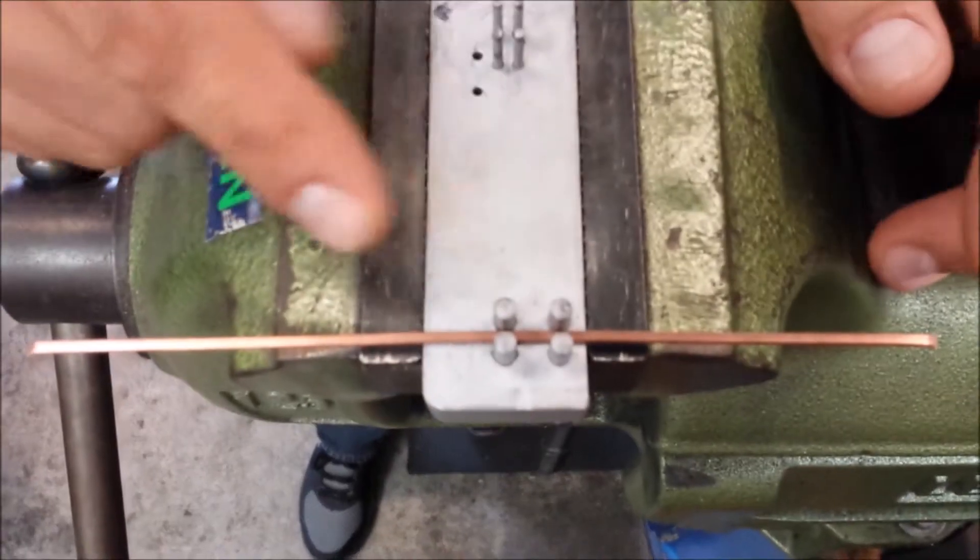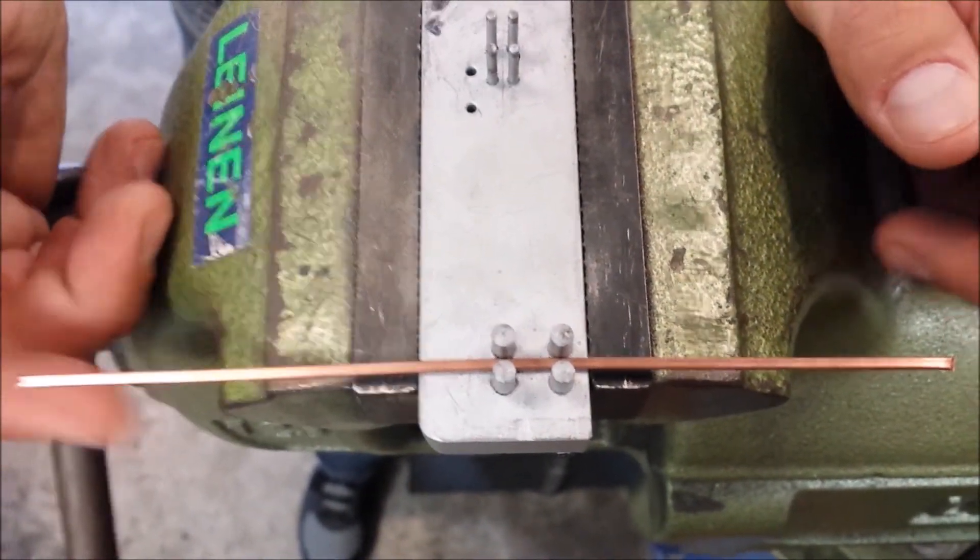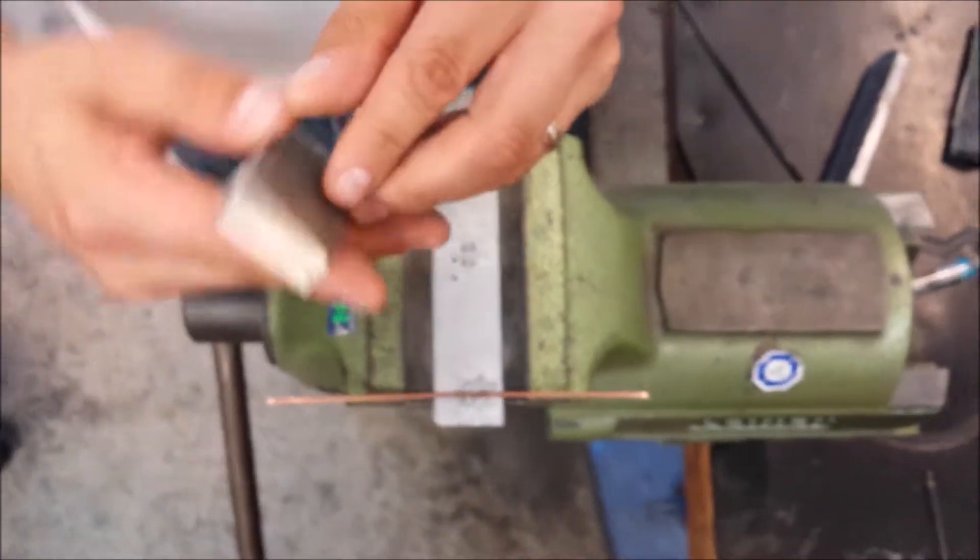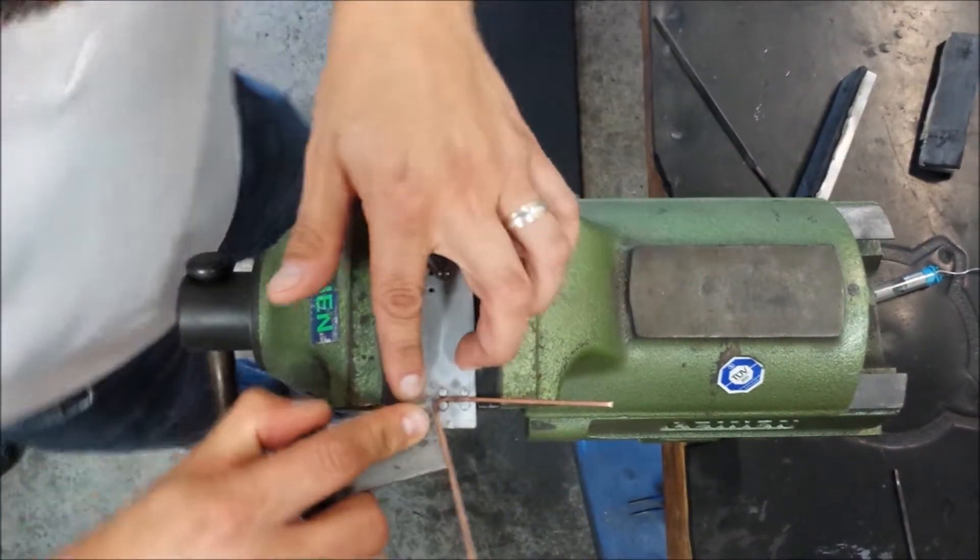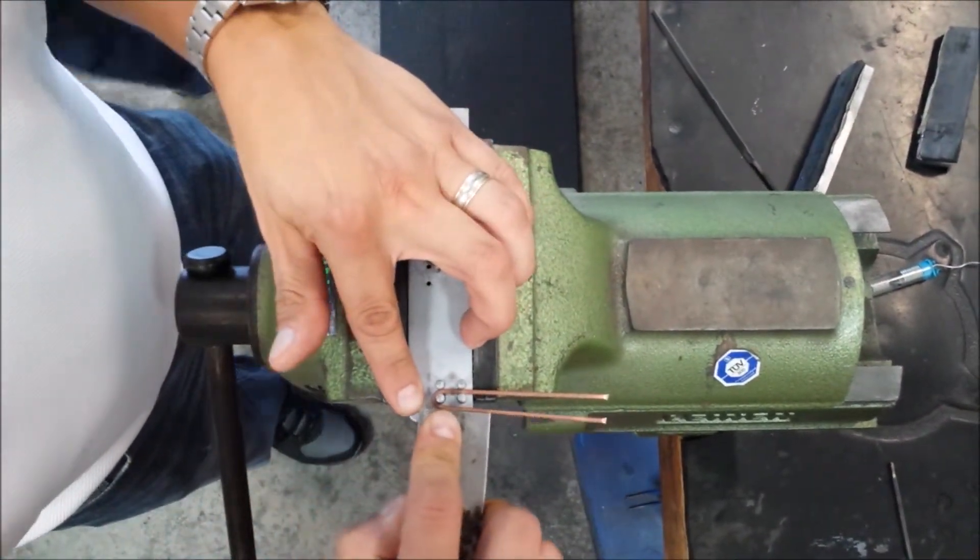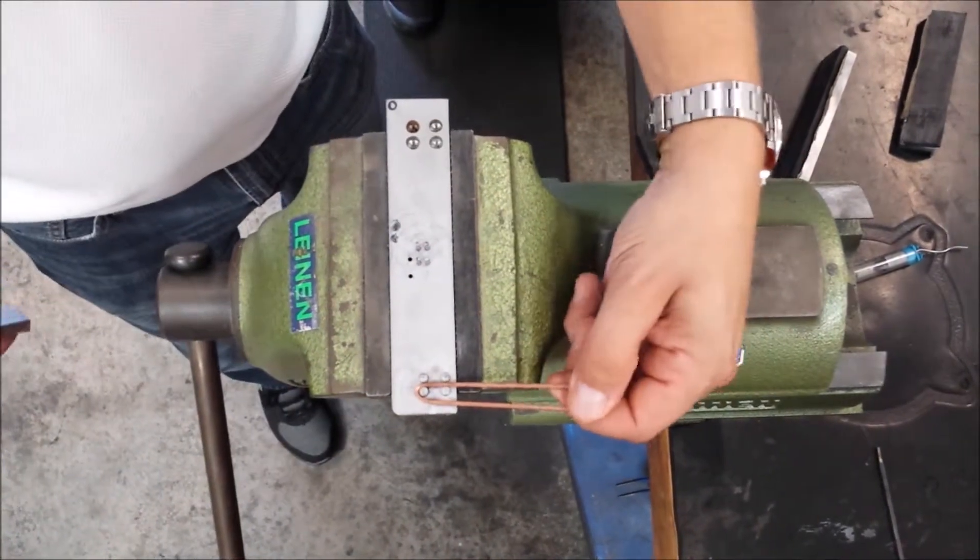This position needs to be about half the length in the middle of the copper tube, approximately. Take a piece of steel and firmly press to bend it around the pin so it's parallel with the other tube. Now we take it out.